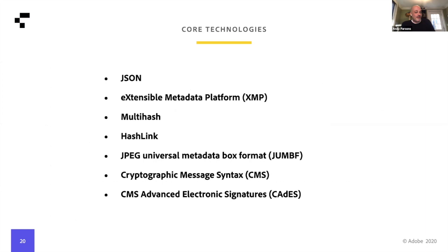Here are the core technologies we use. One worth calling out is JUMBF — from the JPEG group — a box format that enables us to associate data, signatures, and a URI scheme to locate assertions and claims in files or in the cloud. This is very important because you could have some assertions in the file and others in the cloud — for example, if you create a composite of an Adobe Stock image, a Getty image, and something you created yourself, you might have various CAI implementations with metadata stored in different places, and the CAI system can traverse all of them to give the end user a complete ordered set of facts about the image.